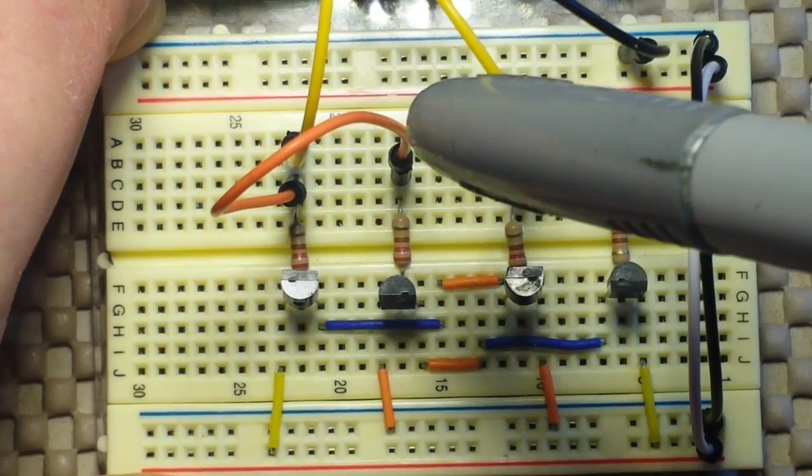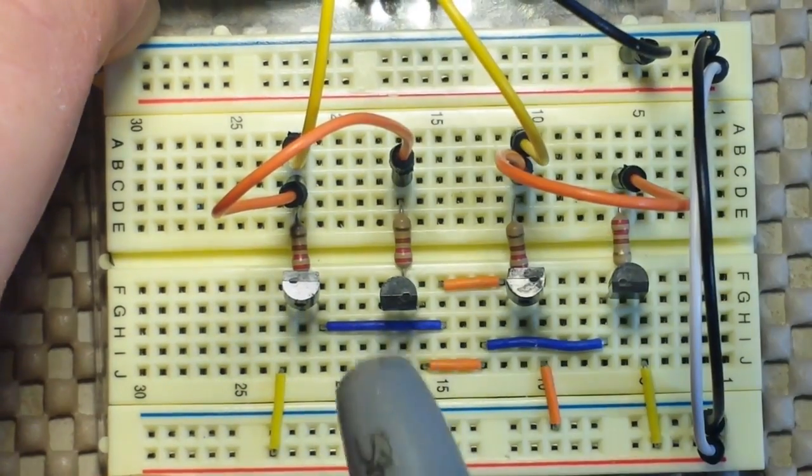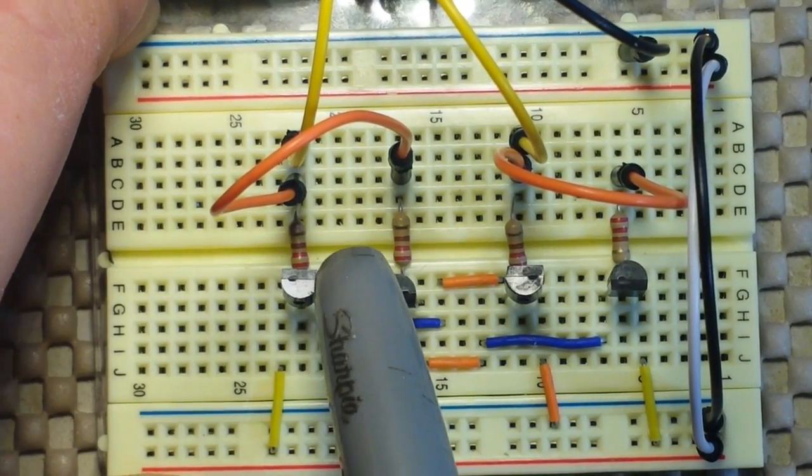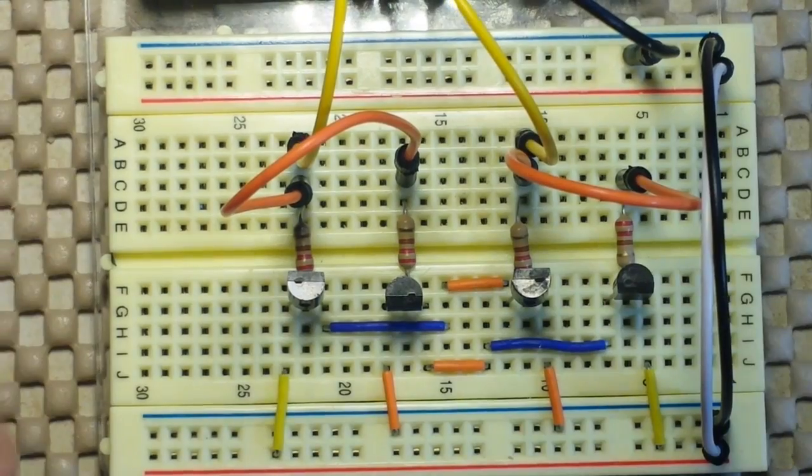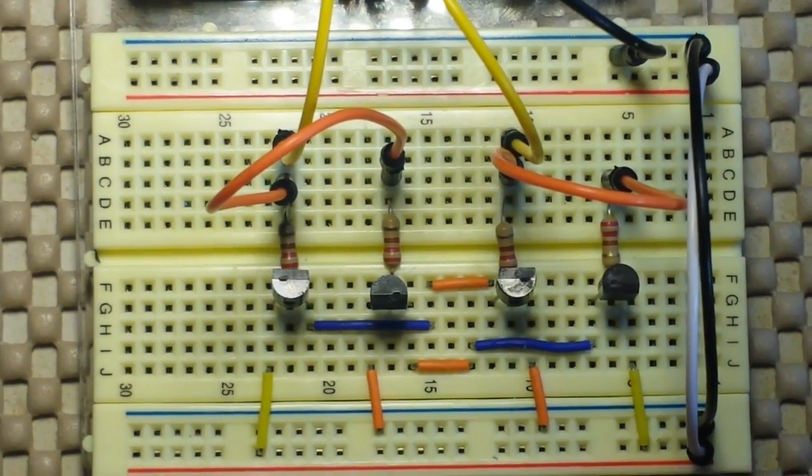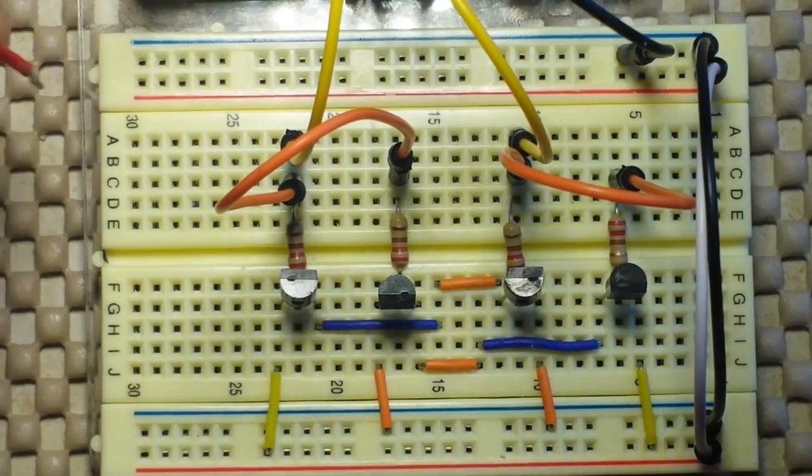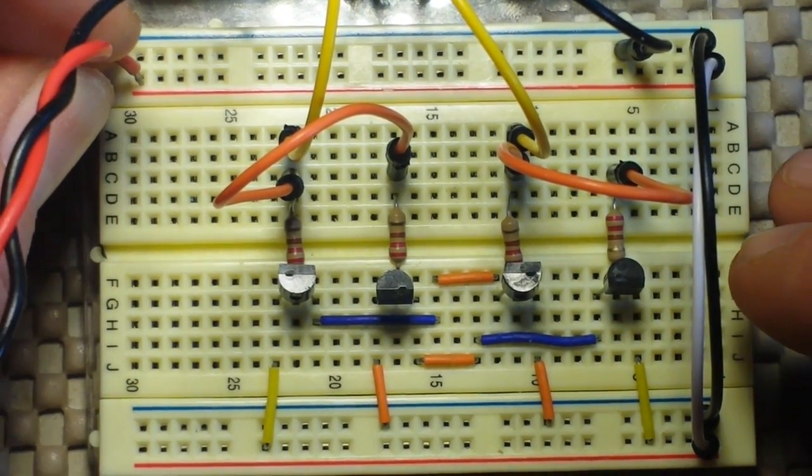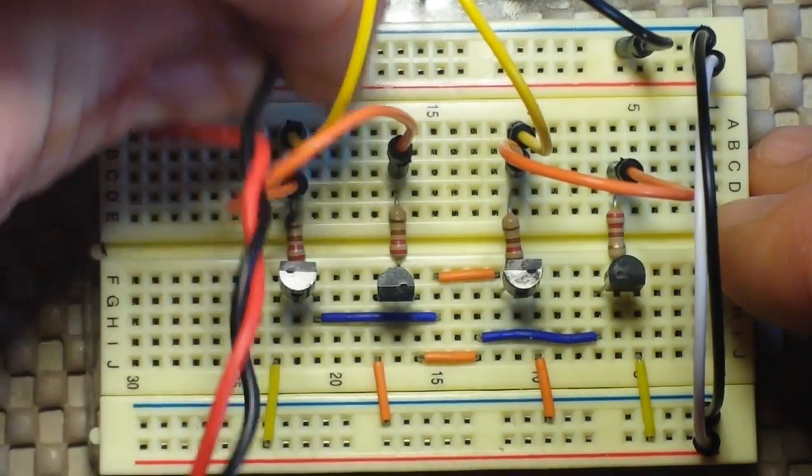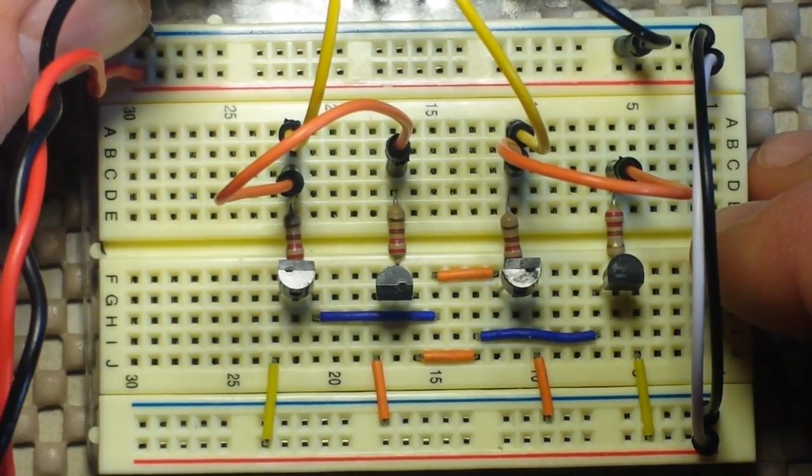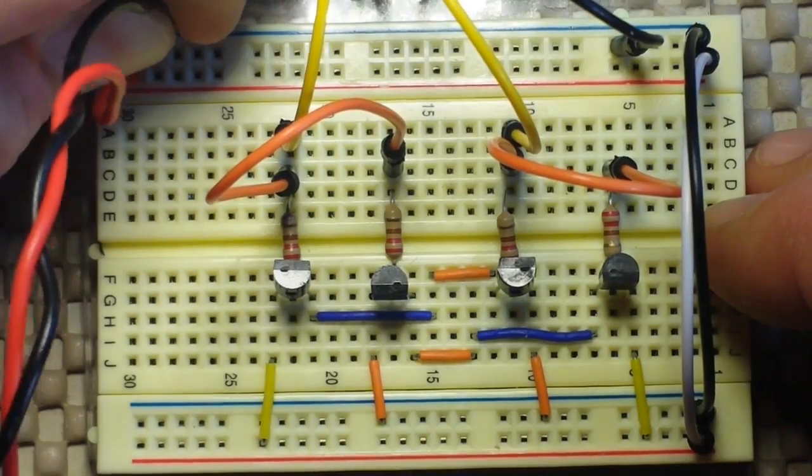Our PWM control lines go to one pair here and one pair here. Now we are not going to drive the motor with the Arduino because the motor is going to require more current than the Arduino can put out. So we're going to drive it in this demonstration case with a couple of rechargeable batteries, about three volts.